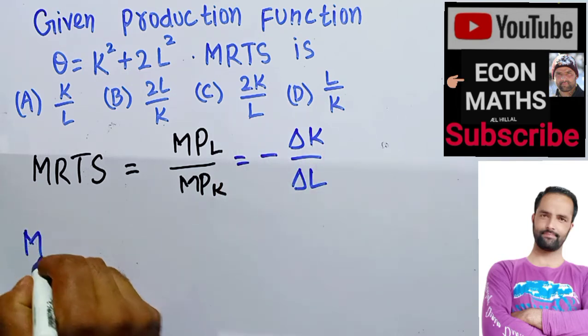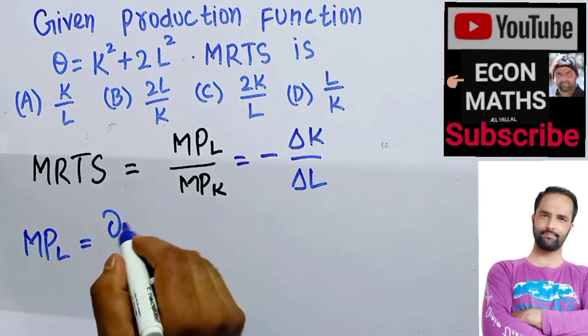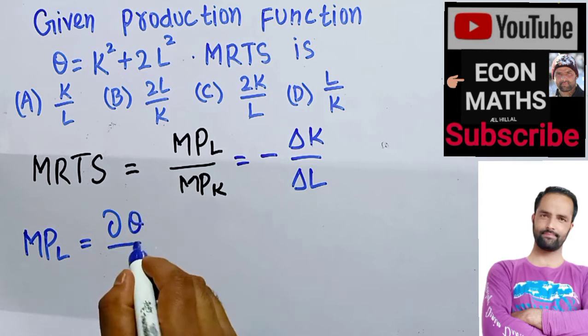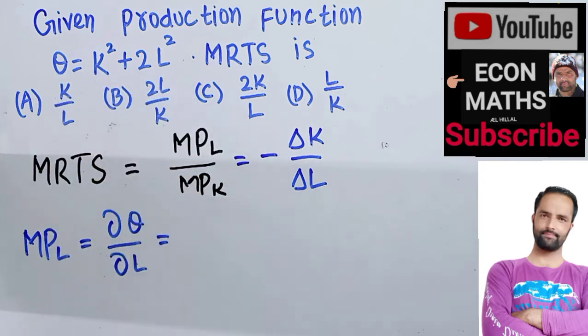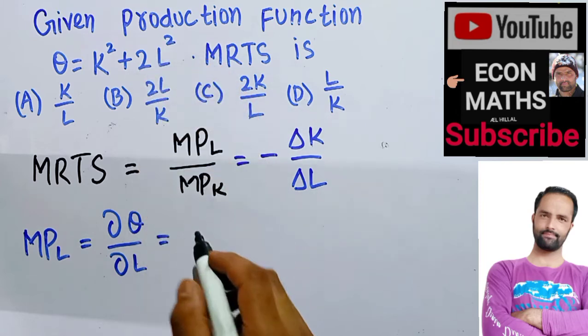What is marginal product of labor? It means the partial derivative of our production function Q with respect to labor. Taking the partial derivative of this function with respect to labor, the derivative of L² is 2L, so 2 times 2 is 4L. The marginal product of labor is 4L.